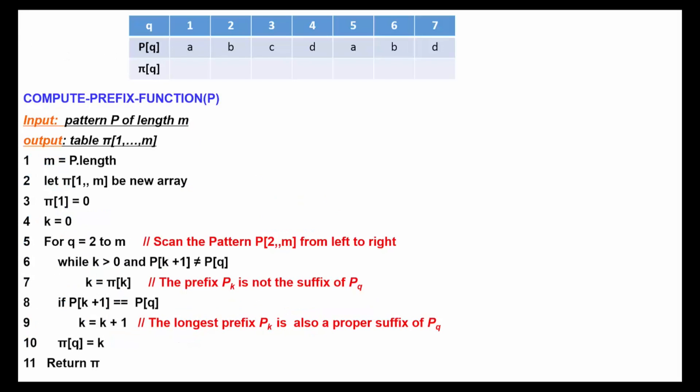The preprocessing phase creates a prefix table of size M, which is the length of the pattern we want to match. The prefix table will tell us the length of the longest substring that matches with the prefix of the pattern.